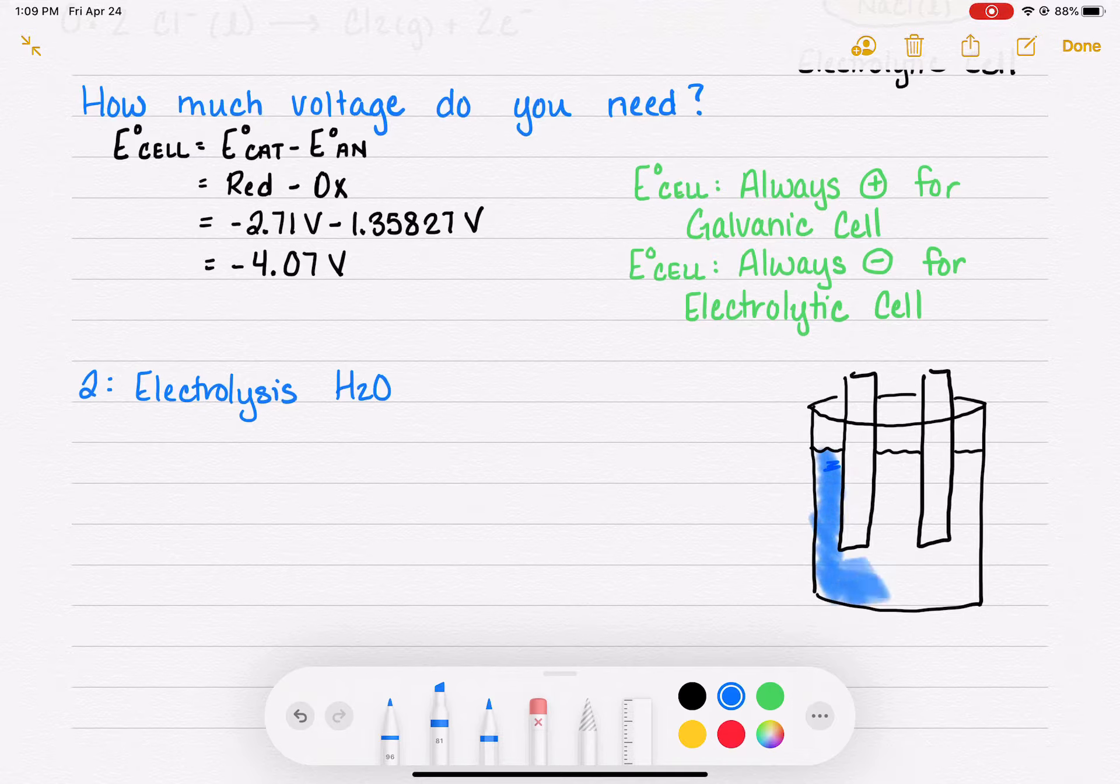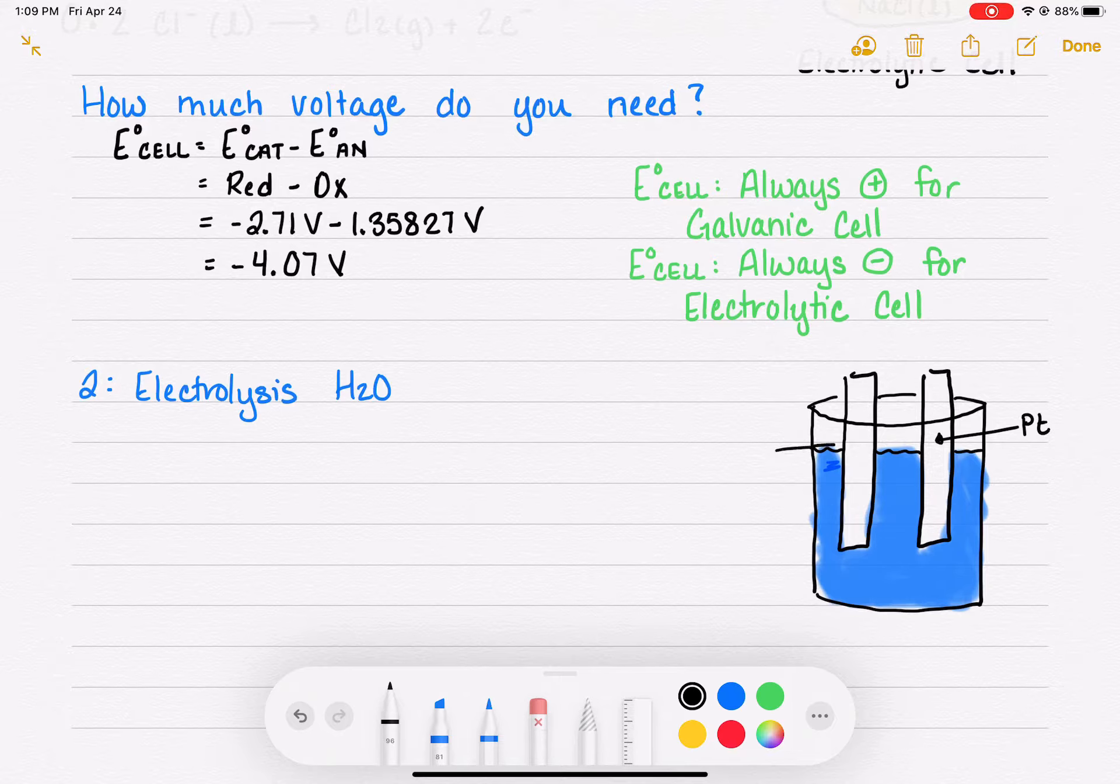For this particular electrolytic cell, because we're doing the electrolysis of water, we want to fill up our beaker with water. The electrodes that work best for the electrolysis of water are platinum. Now that's just what works best, it's not the only thing that works, it's just the most effective.